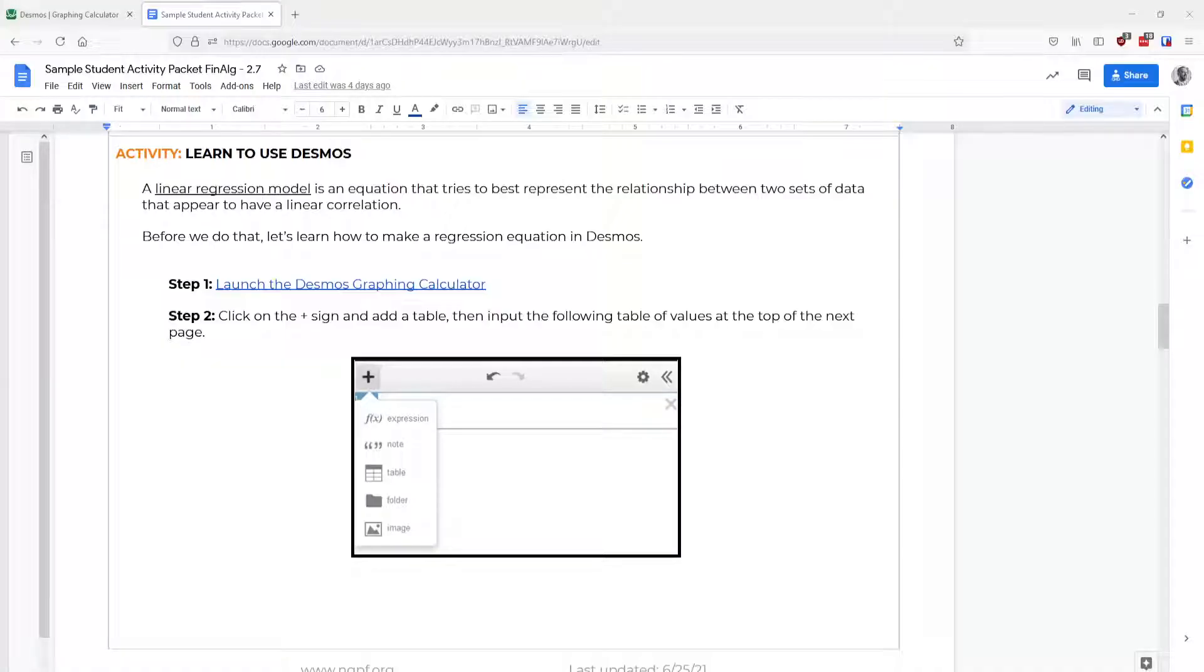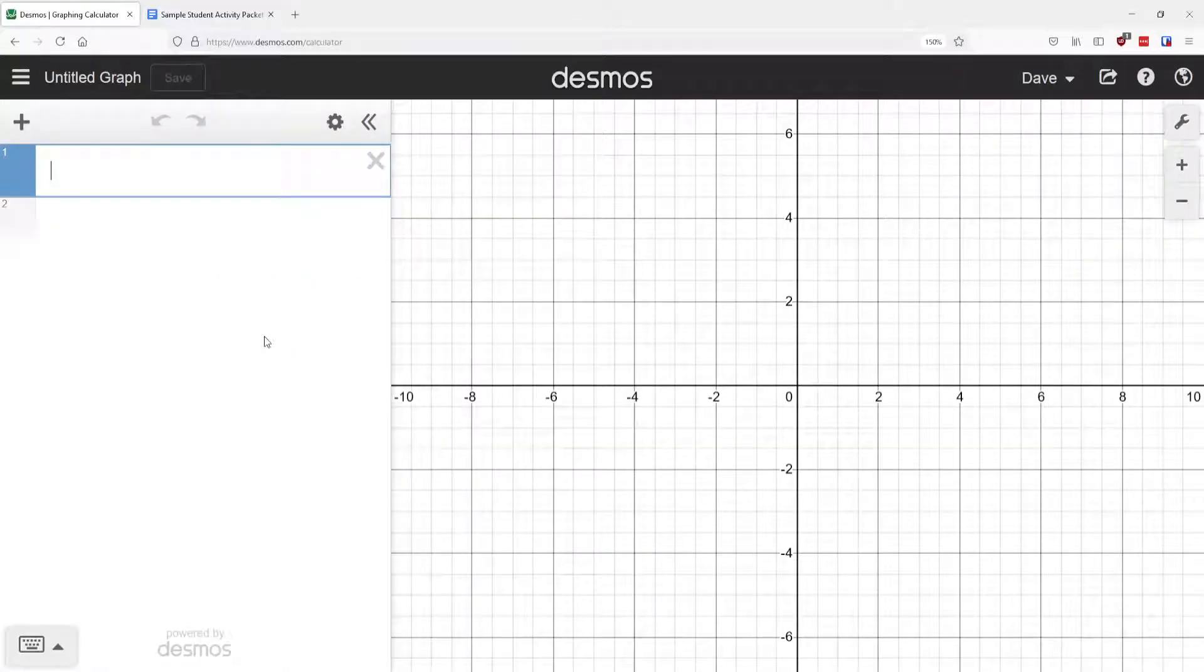So the first thing you need to do is to launch the Desmos graphing calculator. So it's just Desmos.com and when you click on it and launch the graphing calculator, it will bring you to a screen that looks like this.